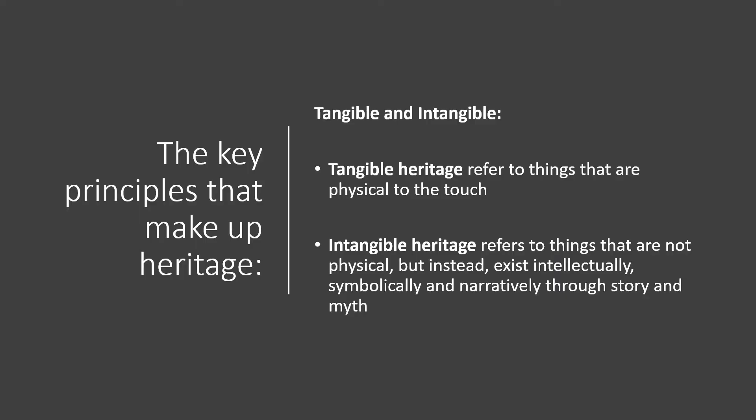With that definition established, we can address the key principles that make up heritage so it may be recognized in society today — specifically the ideas of value, social significance, and intangible and tangible heritage. Tangible heritage refers to things that are physical to the touch, whilst intangible heritage refers to things that are not physical but instead exist intellectually, symbolically and narratively through story and myth.